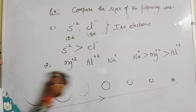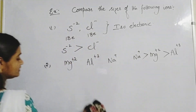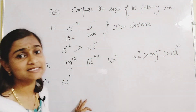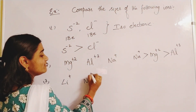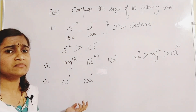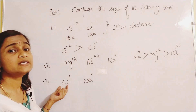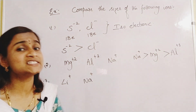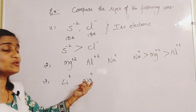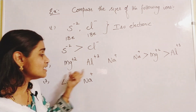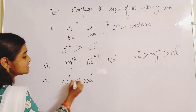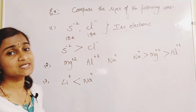Sometimes they may not give isoelectronic species. For example, Li⁺ and Na⁺ have the same charge (+1). Then compare based on atomic number and electronic configuration. Lithium ends at the second orbit (1s², 2s¹), while sodium has electrons in the third orbit (3s¹). Since more orbits means larger size, Na⁺ is bigger than Li⁺ — consistent with the group trend that size increases from top to bottom.